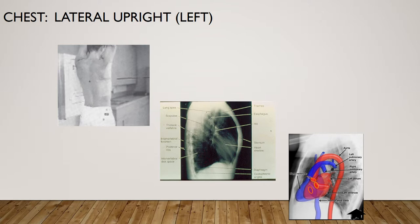Check that the patient is parallel to the image receptor — the mid-sagittal plane should be parallel to the image receptor. Do not push the hips in against the image receptor as that could cause the patient to tilt. The thorax is centered to the central ray and to the image receptor anteriorly and posteriorly. The central ray is parallel and centered to the mid-thorax at the level of T7, and the image receptor and CR should be lowered about one inch from the PA chest x-ray position.